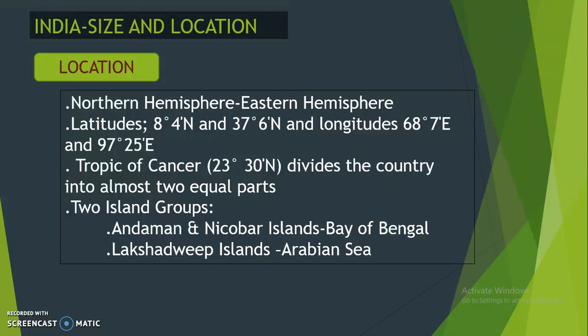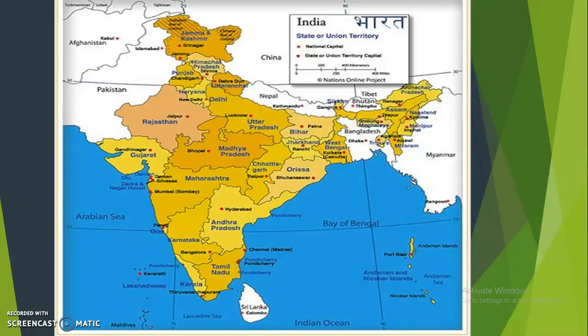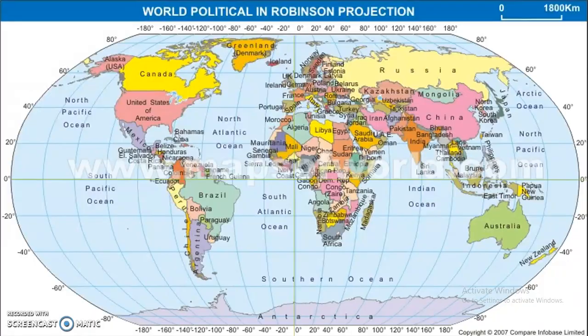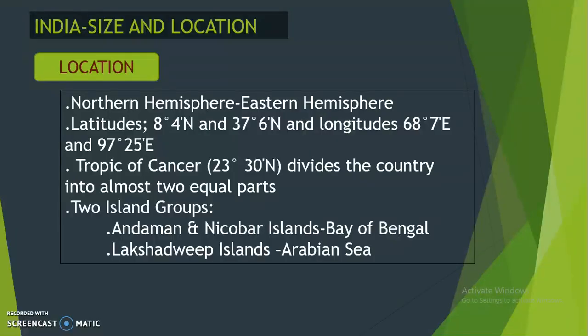Another important point is the Tropic of Cancer, which is 23°30' North latitude. It passes through India and divides it into almost two equal parts — one portion to the north and one to the south.